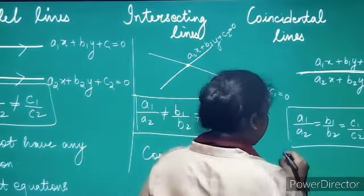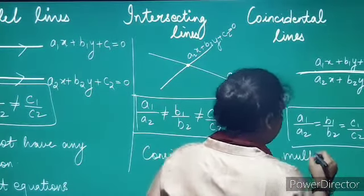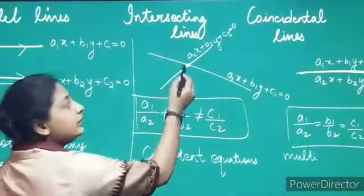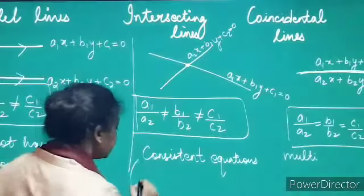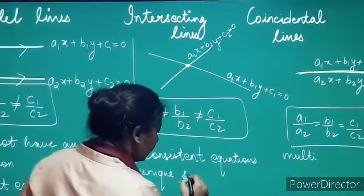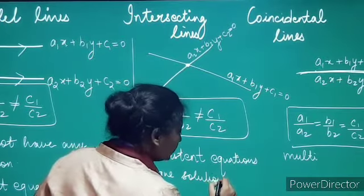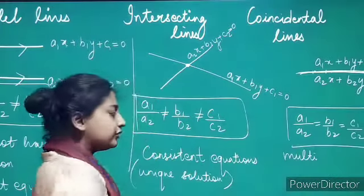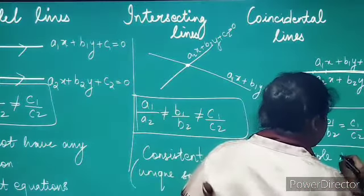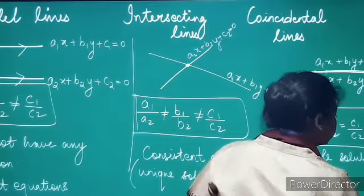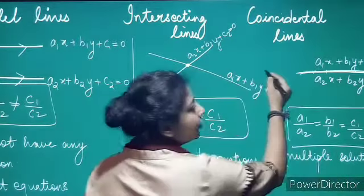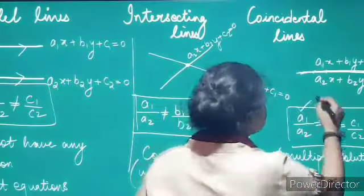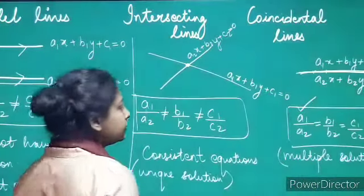These two equations have multiple solutions. In the case of intersecting lines, there was only one intersecting point, so only one unique solution was possible. But here, there can be infinite points lying on the two coinciding lines, so we have infinitely many solutions possible. All the points lying on the line will be solutions for the equations.